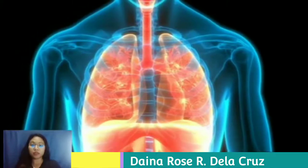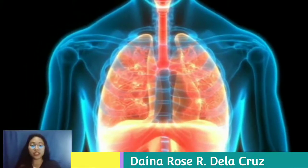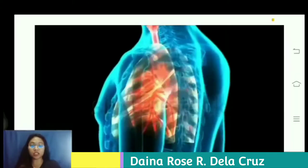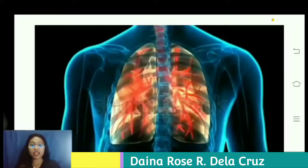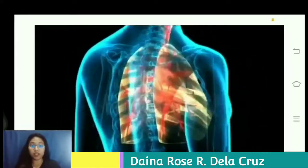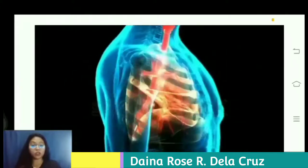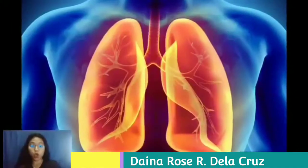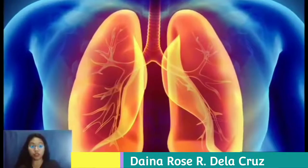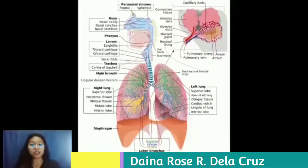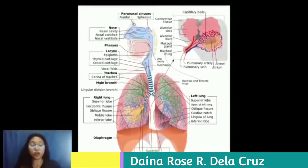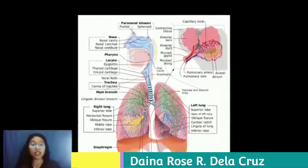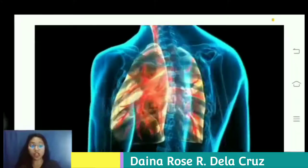Hello everyone, I'm Diana Rose R. Delacrosse from BZ1D and I'm going to discuss the respiratory system. The human respiratory system is a series of organs responsible for taking in oxygen and expelling carbon dioxide. The primary organs of the respiratory system are the lungs, which carry out this exchange of gases as we breathe. It has many parts that work together to move oxygen throughout the body and clean out waste gases like carbon dioxide.